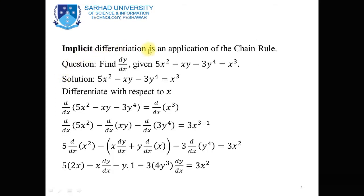Implicit differentiation is an application of the chain rule. Consider this problem: 5x² − xy − 3y⁴ = x³. This is an implicit function because the range term y is not expressed in terms of the domain. Now, how do we take the derivative of this implicit function? The main goal of this lecture is to calculate the derivative of an implicit function. To find the derivative, we differentiate with respect to x.